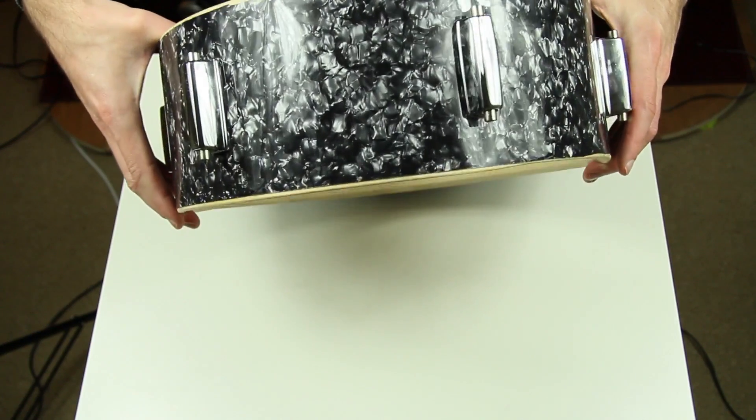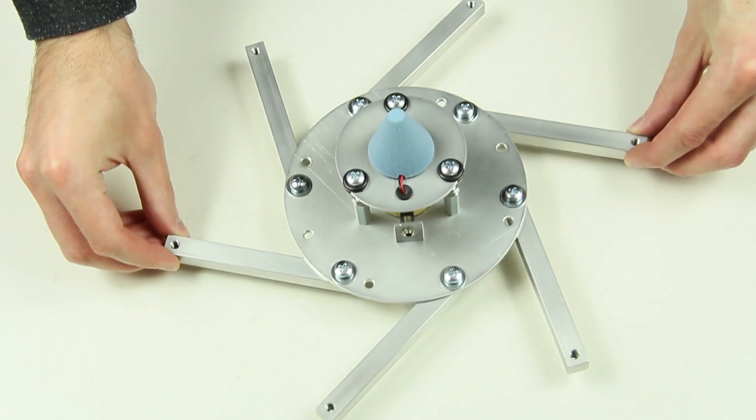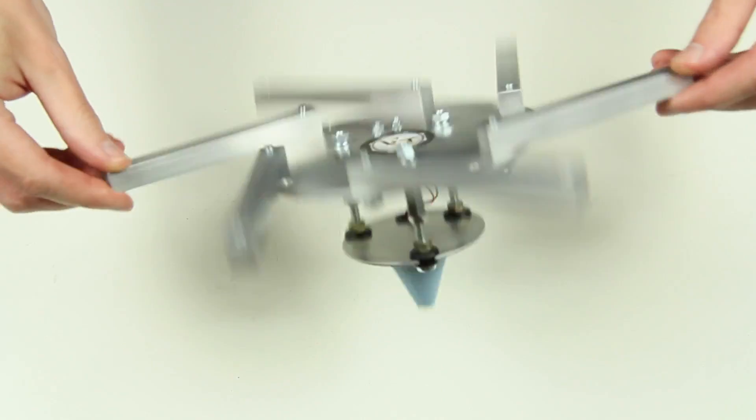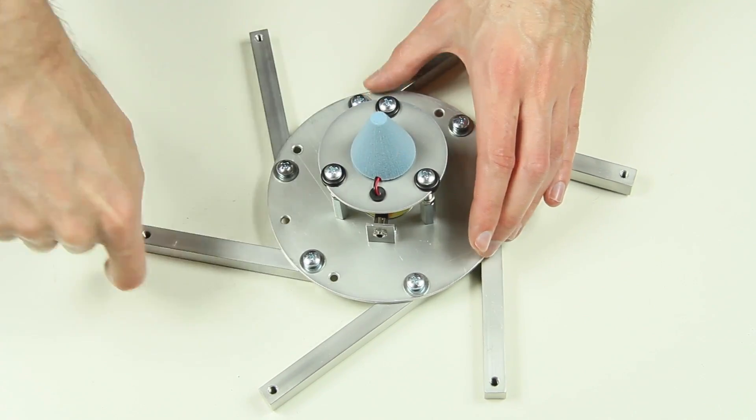This episode is about converting the 13-inch snare drum. We will install our brand new Flex Trigger System. This system is not limited to a specific shell size.